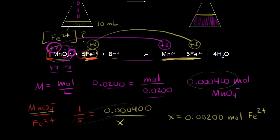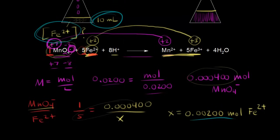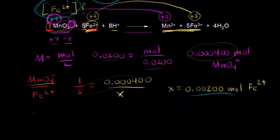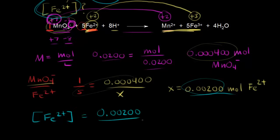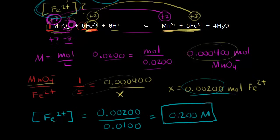We're almost done — our goal was to find the concentration of iron 2+ cations, and now we have moles and know the original volume, which was 10 milliliters (0.01 liters). Concentration = 0.002 moles ÷ 0.01 liters = 0.2 molar. So 0.2 M was the original concentration of iron 2+ ions in solution.